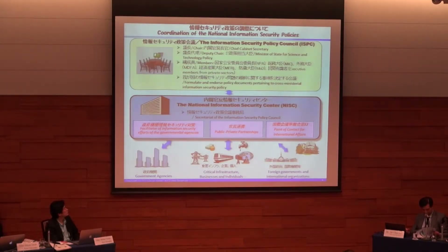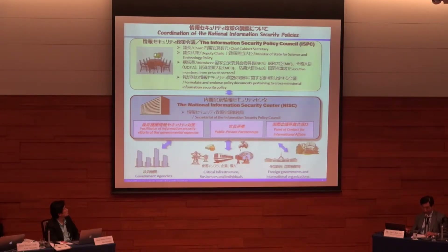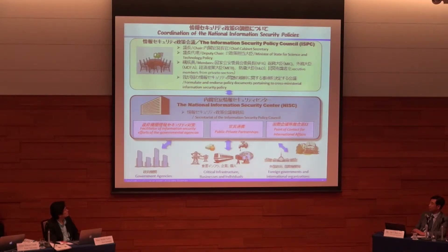This slide describes coordination mechanisms for information security policies in Japan. Key organizations are the Information Security Policy Council, ISPC, and NISC, the National Information Security Center. ISPC was established in 2005 and is the supreme body for endorsing important information security policies in Japan. Our Chief Cabinet Secretary chairs ISPC, supported by a Minister of IT Policy. Members include Ministers of National Public Safety Commission, MIC, METI, and MOD, as well as executive members from private sectors. Professor Amurai and Professor Tsuchiya are members of the ISPC.